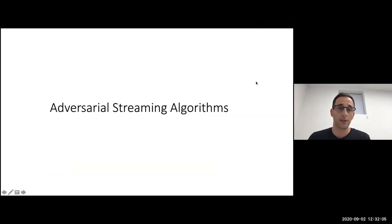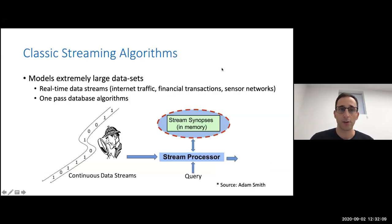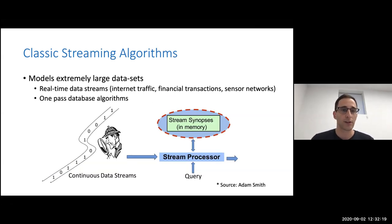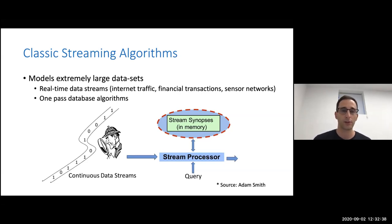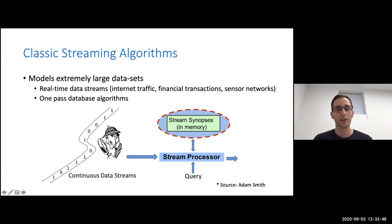I want to start with adversarial streaming algorithms. What are classical streaming algorithms? These come to model cases where you have a very large data set — real-time data streams such as internet traffic. Think of a router getting millions of packets a second that wants to perform some analysis, financial transactions, and more. It's also very good for one-pass database algorithms where you have a huge database and want an algorithm that reads it from left to right using a very small amount of memory.